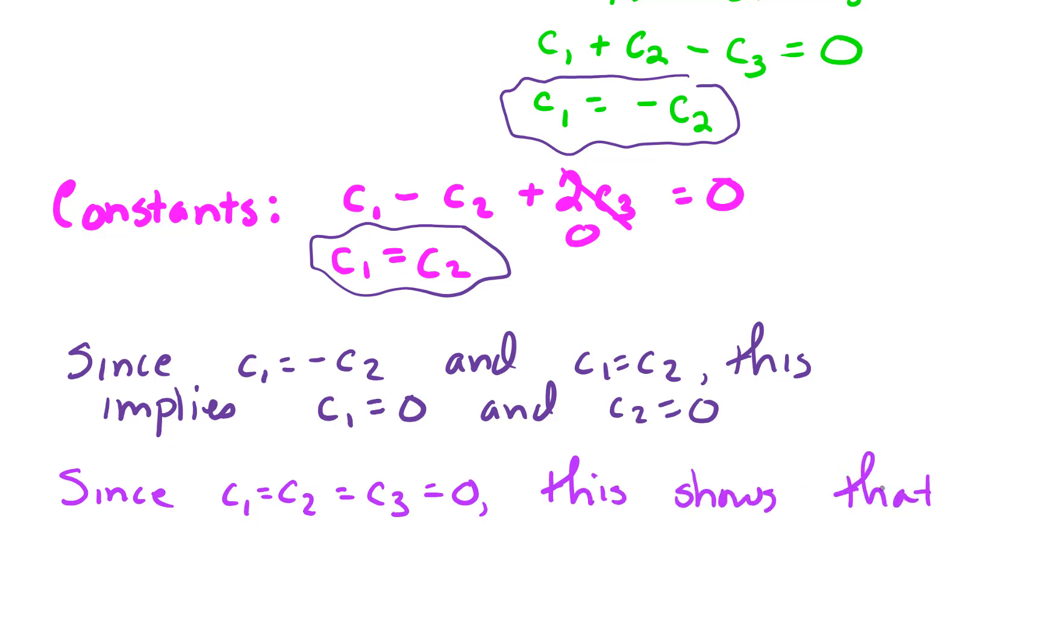Since C1, C2, C3 must all be zero, this shows that the set given by x plus 1, x minus 1, x squared minus x plus 2, is linearly independent.